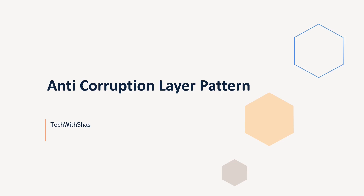This pattern is really helpful when we are migrating any legacy systems or applications to modern applications gradually. Because we are doing this migration gradually, both legacy and new application must coexist at the same time. So how do we ensure that the new application is not corrupted by the previous old obsolete APIs and protocols?